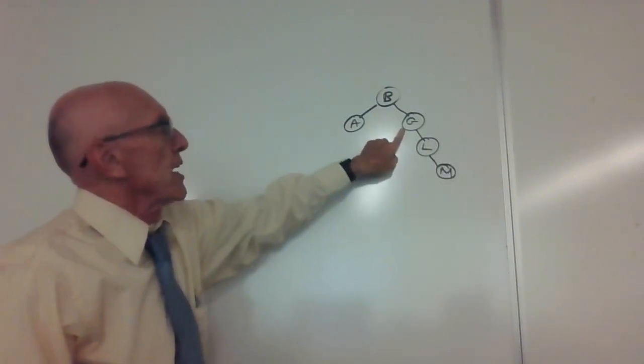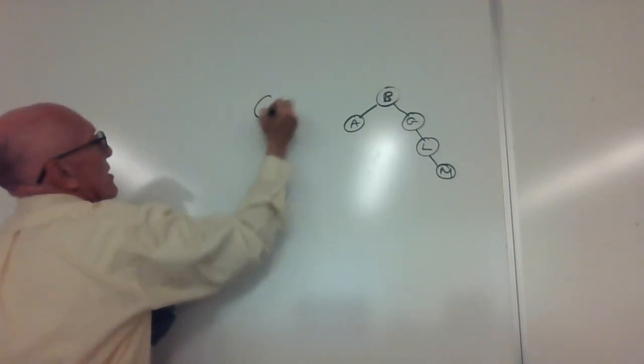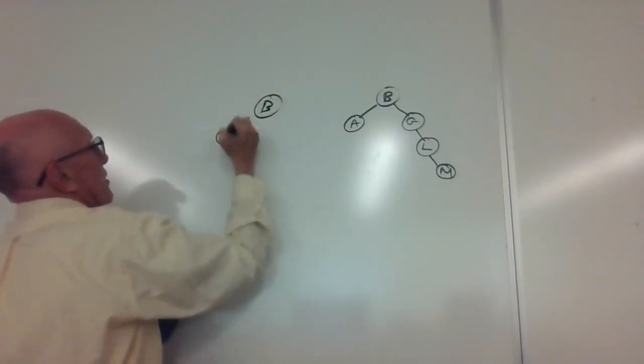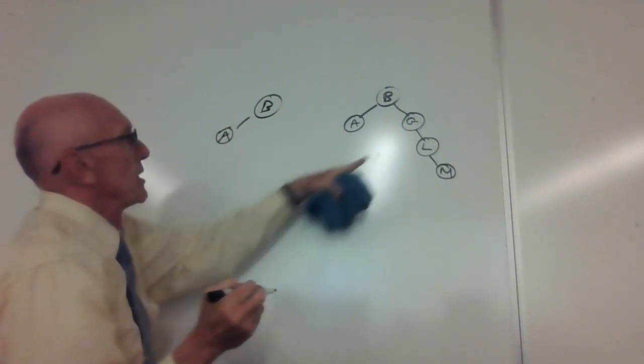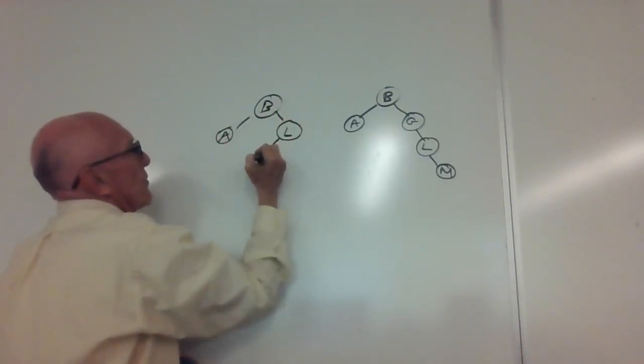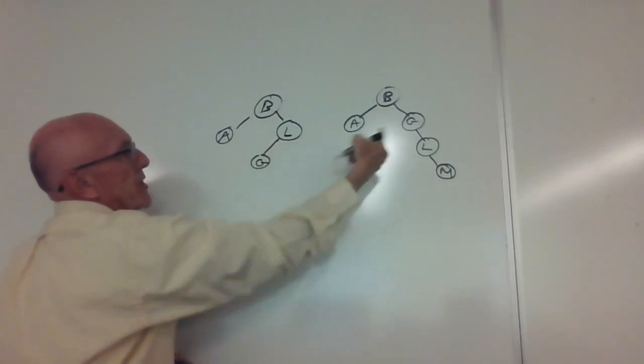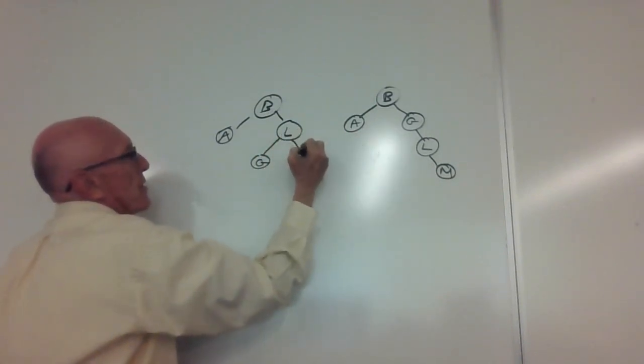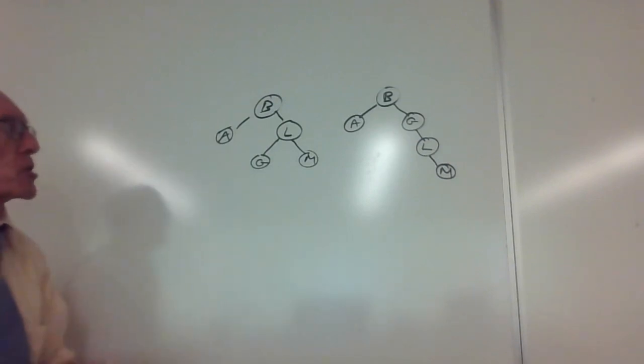That means we're going to have to rotate around G. Our B and A are going to stay where they were, and now the L is going to move up here, the G is going to move down to the left, and the M is going to rotate into this position. Hooray, we're back in balance.